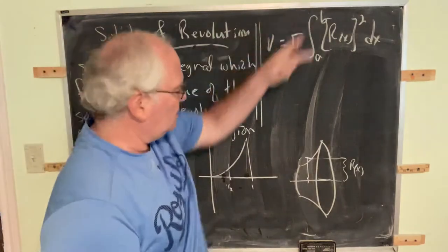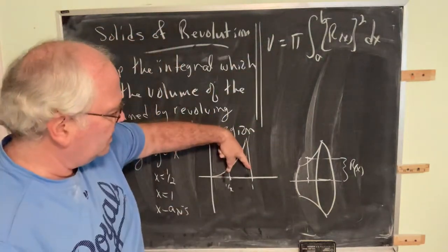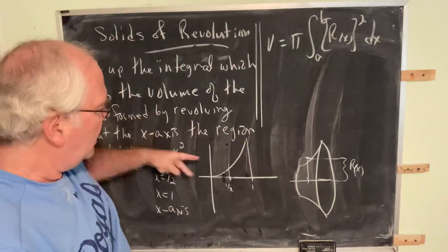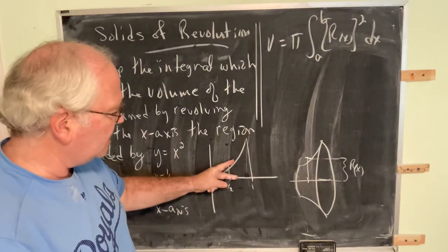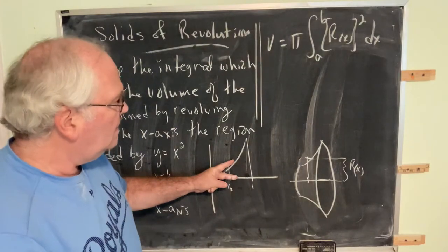The limits of integration are determined by the left and right endpoints of the interval of interest. We're revolving about the x-axis, so the bottom boundary is the x-axis.